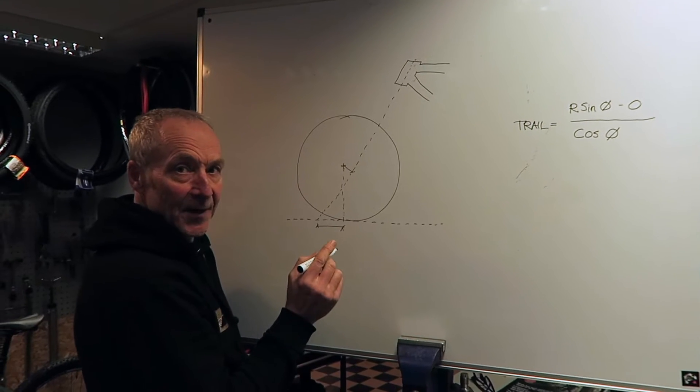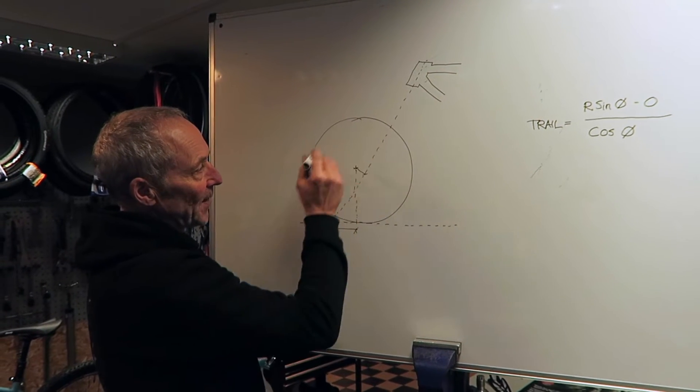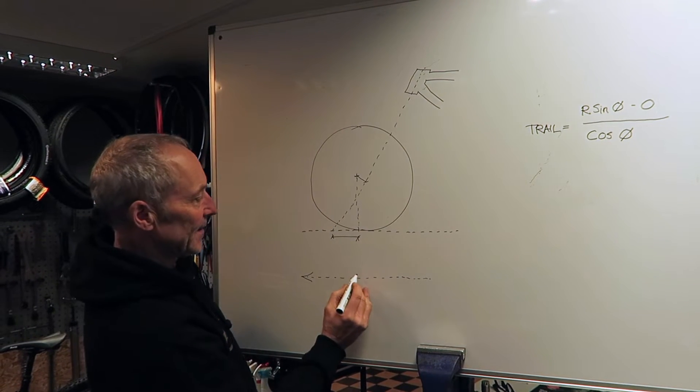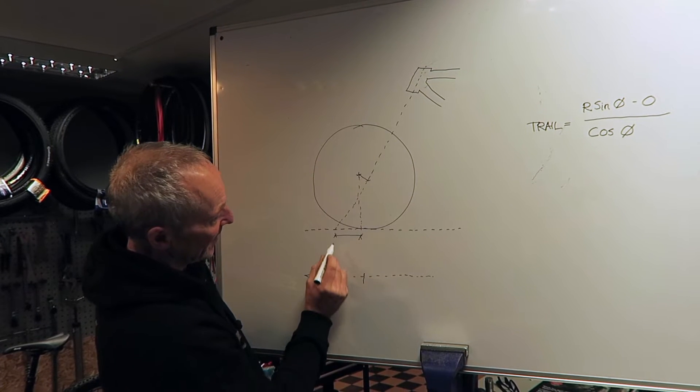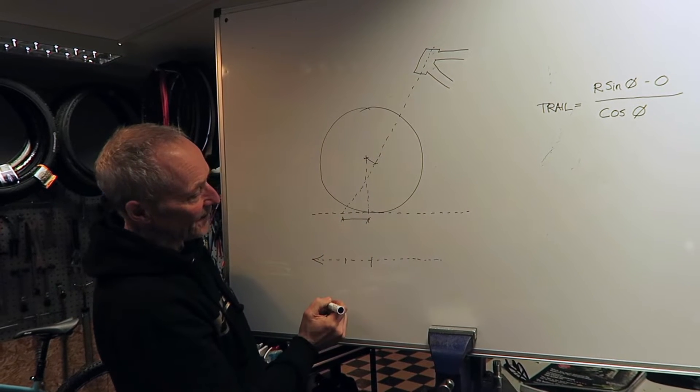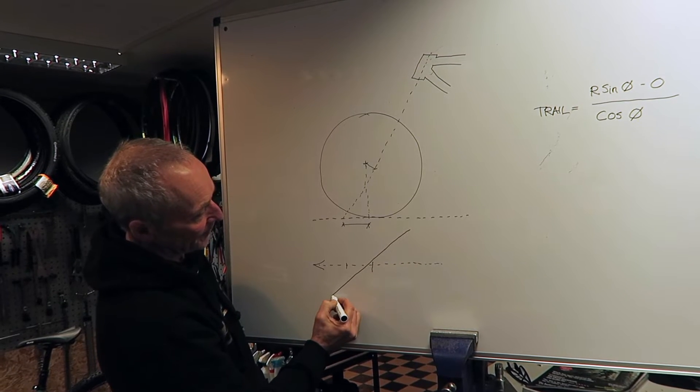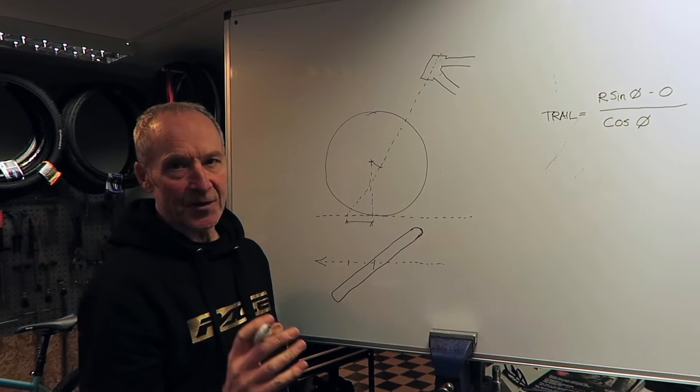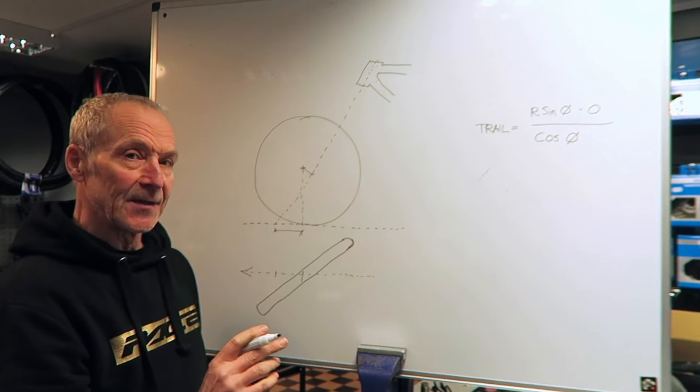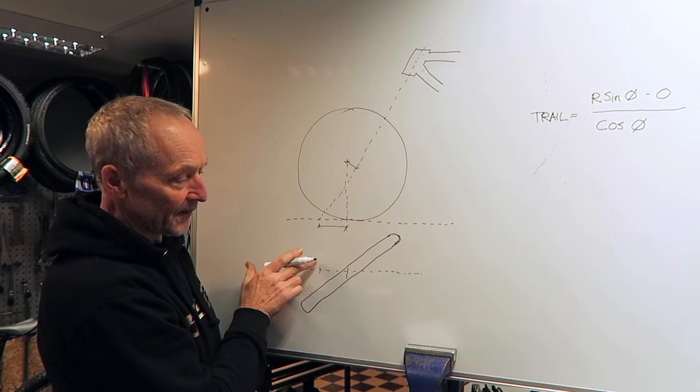Let me explain a little bit why trail is so important to the handling of your bike. If we take this little plan but view it from above, this is the direction that we're riding in, this is the center of the axle. If we look from above, that's actually the point where the steering axis touches the ground.